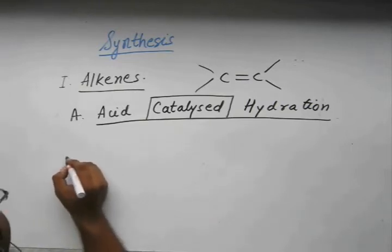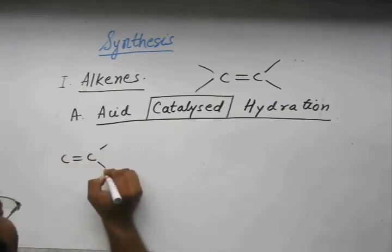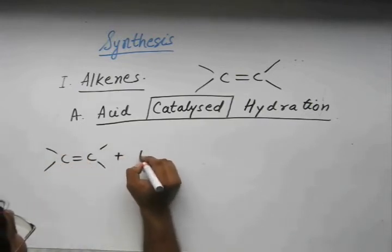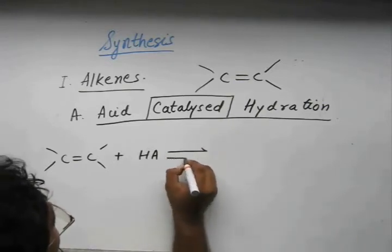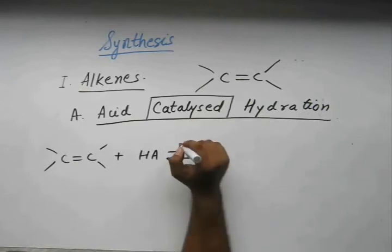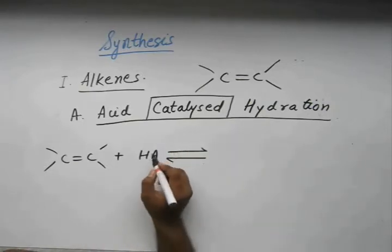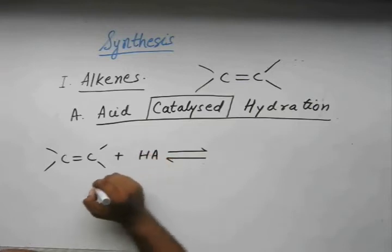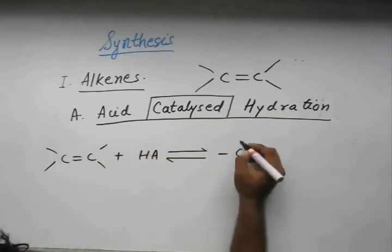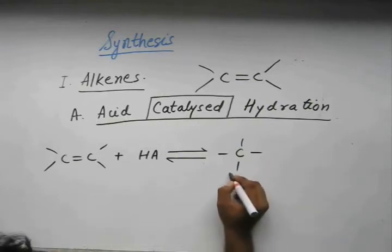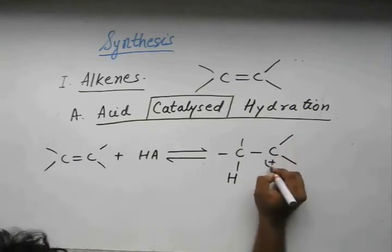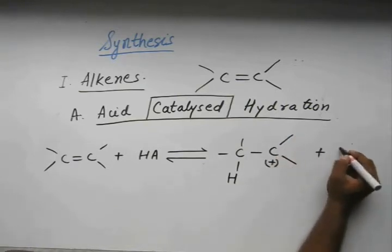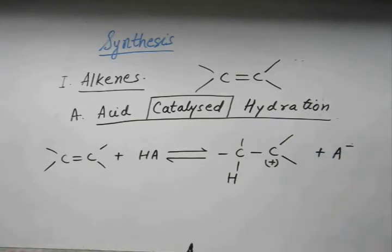So this is the general representation. We have an acid. All processes, all steps in this reaction are reversible. So this H+ is attached to this alkene. What happens? The hybridization changes. We have this H over here and one carbocation is generated and the conjugate base of this acid is also released over here.